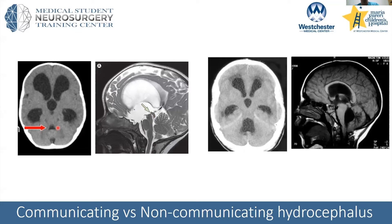In non-communicating hydrocephalus, the fourth ventricle is very small while the rest are enlarged. In communicating hydrocephalus, everything is enlarged — there's no focal obstruction. The obstruction is really at the end of the pathway, where CSF is not getting absorbed or too much is being produced.